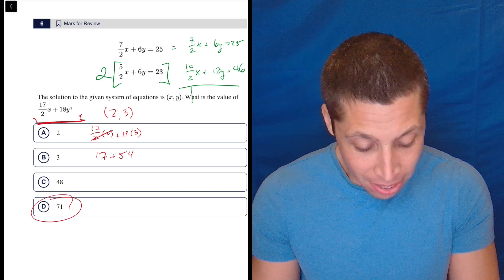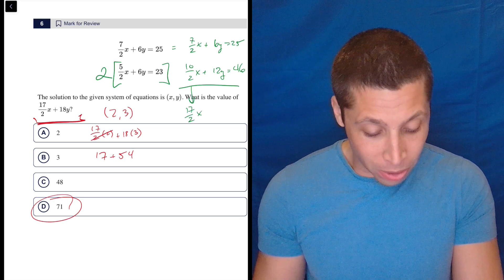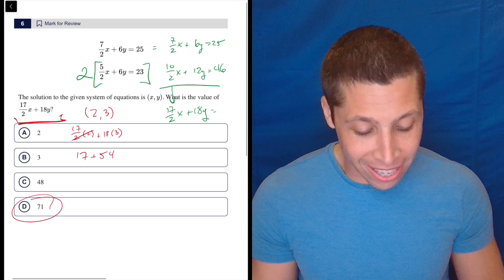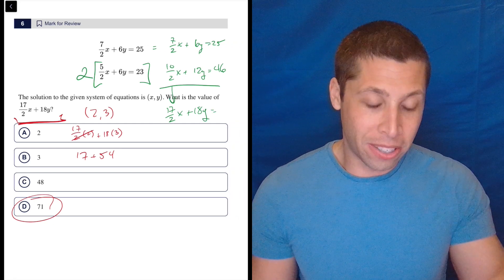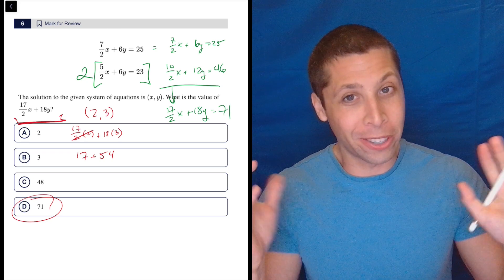What's 10 halves and 7 halves? That's 17 halves x. Oh, that's exactly what we wanted. What's 6y and 12y? Oh, that's 18y. Exactly what we wanted. What's 46 and 25? 46 and 20 is 66 plus 5 is 71. Ooh, what a great shortcut.